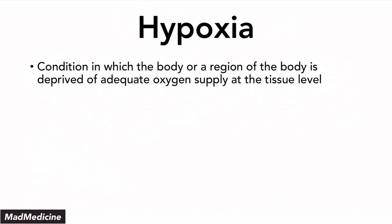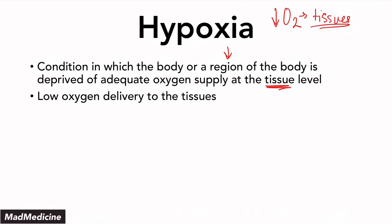Hypoxia is essentially a condition where your body, or a region of your body, is deprived of enough oxygen. It doesn't have to be your entire body — it can also be a region that is affected. Essentially, at the tissue level, you do not have enough oxygen. You have low oxygen being supplied to your tissues. That is what hypoxia is — an overarching pathology happening at the tissue level.